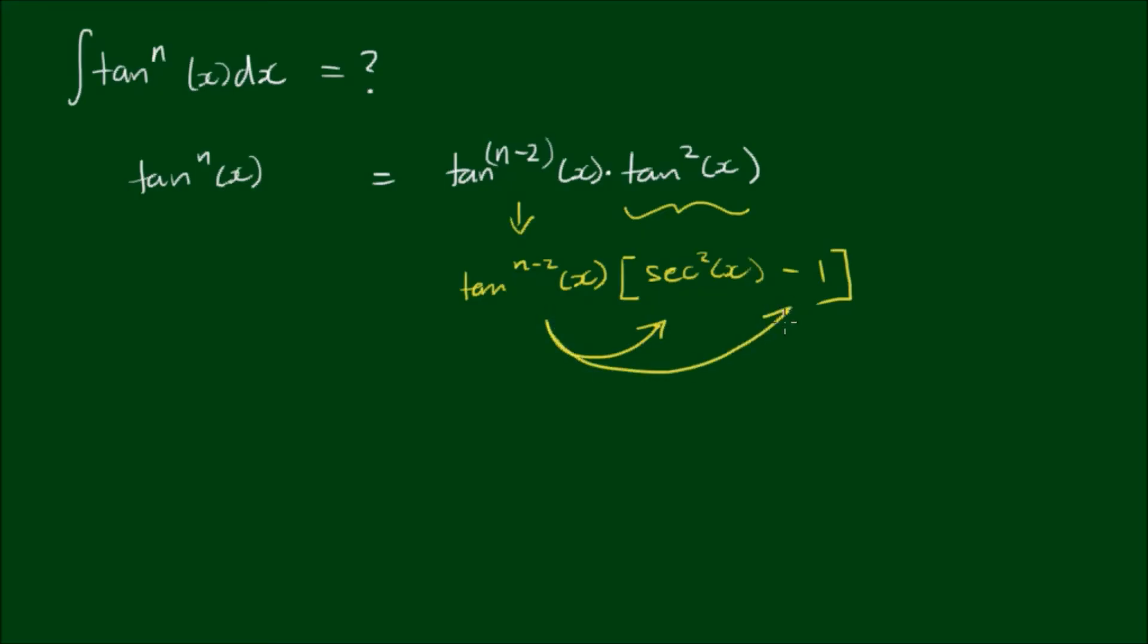And this tan of the nth power minus 2 out the front we can expand into the brackets here. So parentheses are round brackets and the square brackets are the square brackets. And these are braces I think, correct me if I'm wrong. So expanding that in we have tan to the n minus 2 by the secant squared.